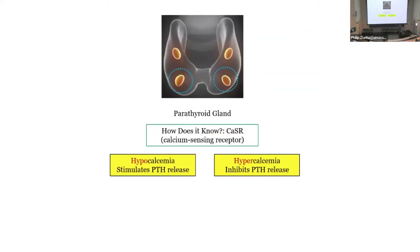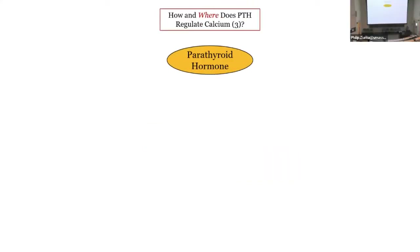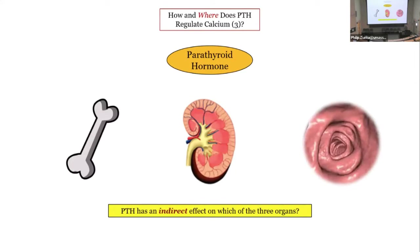Hypocalcemia is going to stimulate PTH release; hypercalcemia inhibits PTH release. So how and where does PTH regulate calcium? There are three sites where it works: bone, kidney, and intestine.